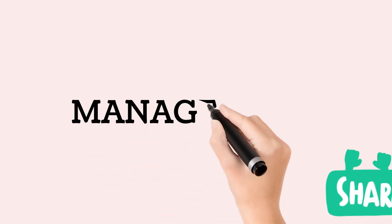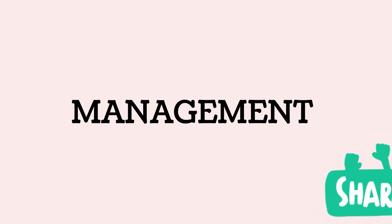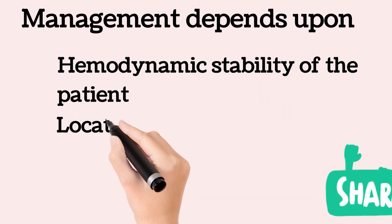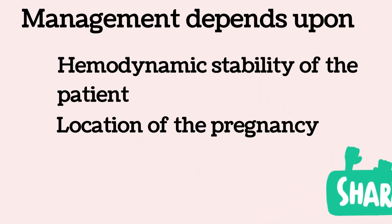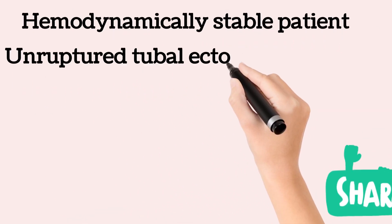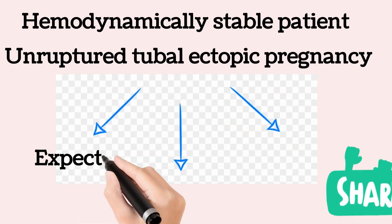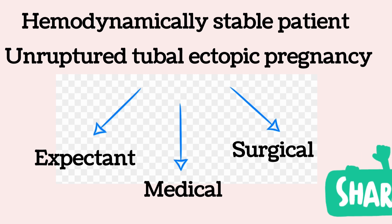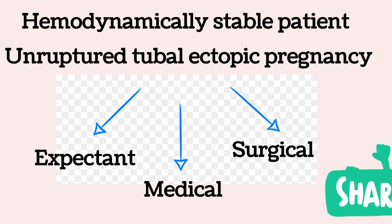Management of ectopic pregnancy depends on the hemodynamic stability of the patient and the location of the pregnancy. If the patient is hemodynamically unstable, then immediate laparotomy should be done. If the patient is hemodynamically stable with an unruptured tubal ectopic pregnancy, management options are expectant, medical, and surgical, depending on the activity of the ectopic pregnancy as determined by symptoms and diagnostic findings.